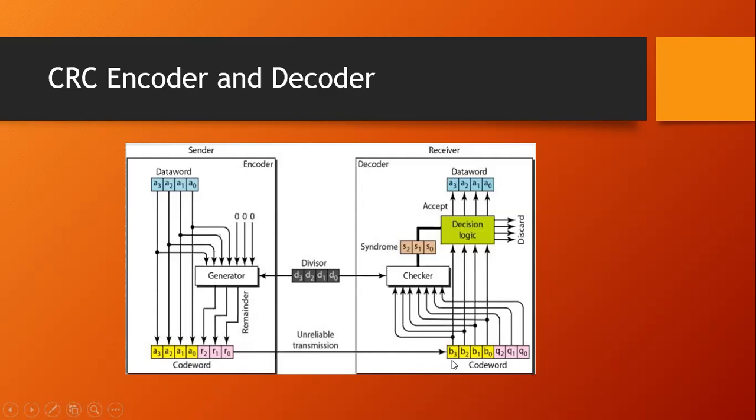The code word is sent to the receiver side. A decoding process takes place at the receiver side. The code word is passed to a process known as the checker, which is also provided with the same four-bit divisor. The division process takes place again at the checker side, and the remainder is known as the syndrome. Decision logic is applied to the syndrome to decide whether the data word will be accepted or discarded.